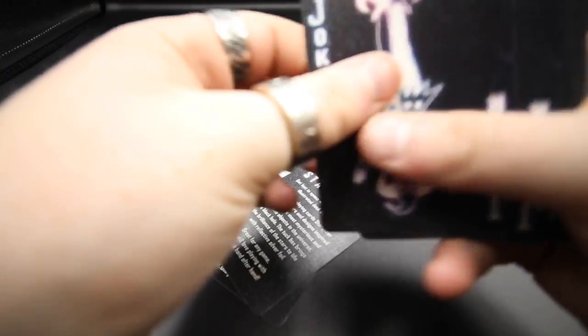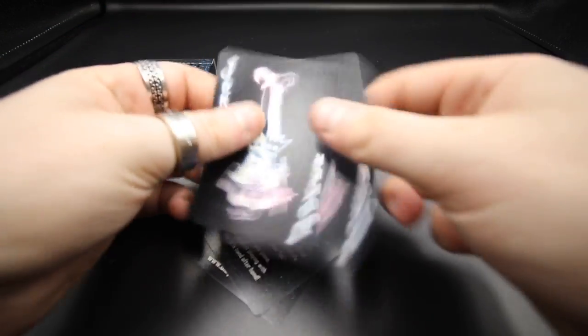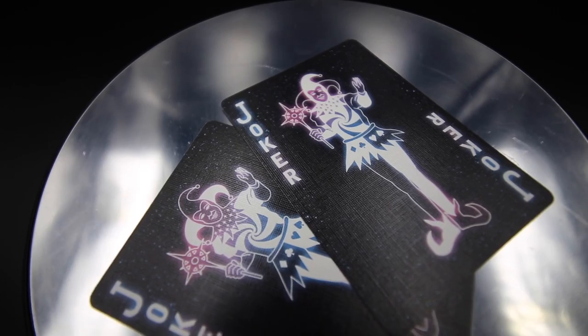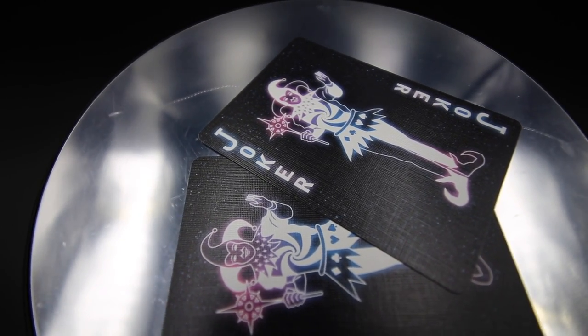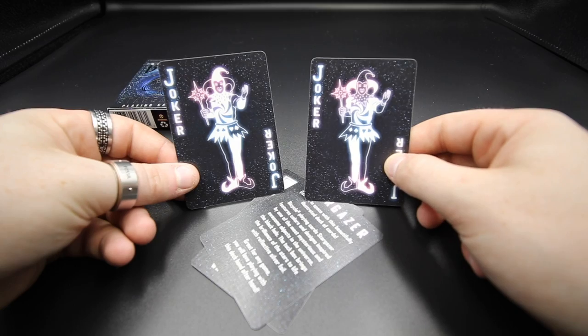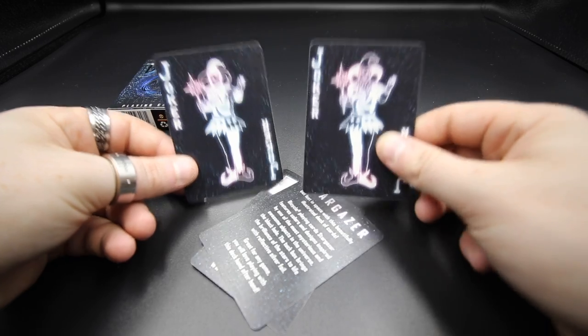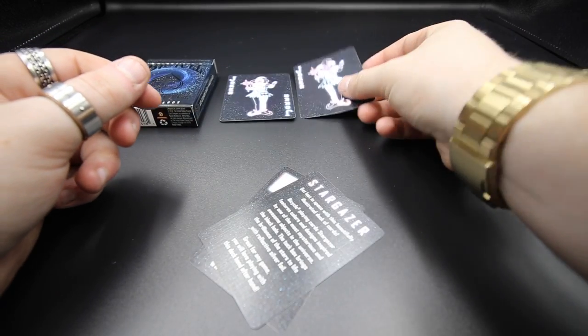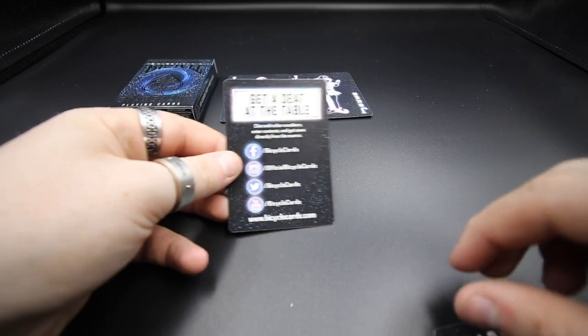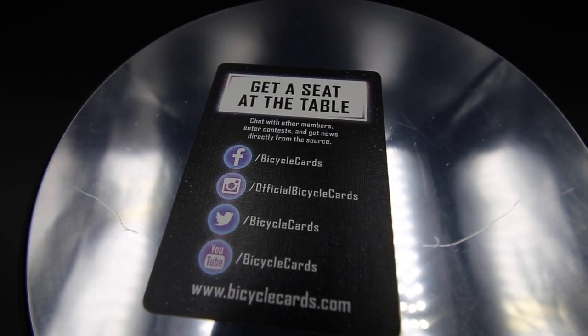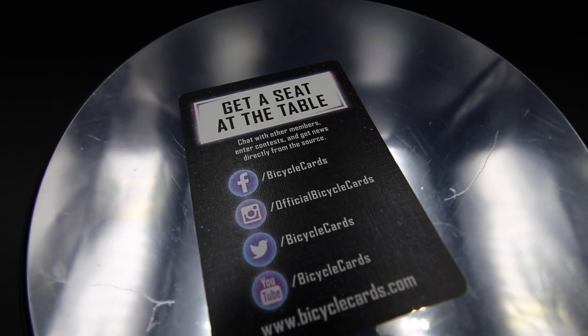So first off you get, I'll show you these first. Right so you get two Jokers. It says Joker Joker. So you just get two of those. And they're very shiny and look luminous and like neon. And then you also get one that says get at the table. And it has bicycle cards and basically their social media stuff.